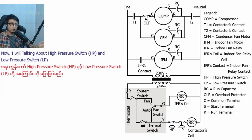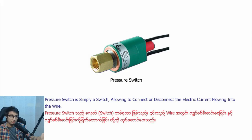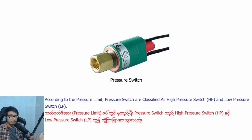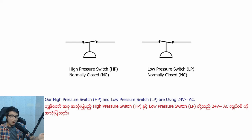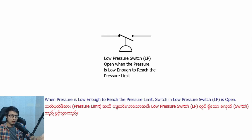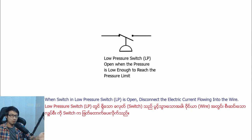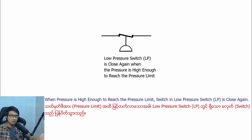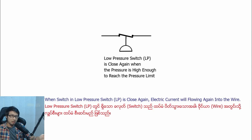Now I will talk about the high-pressure switch and low-pressure switch. A pressure switch is simply a switch that allows connecting or disconnecting the electric current flowing into the wire according to the pressure limit. Pressure switches are classified as high-pressure switch and low-pressure switch. Our high-pressure switch and low-pressure switch are using 24V AC. When pressure is low enough to reach the pressure limit, the low-pressure switch opens and disconnects the electric current. When pressure rises high enough, the low-pressure switch closes again and electric current flows again.